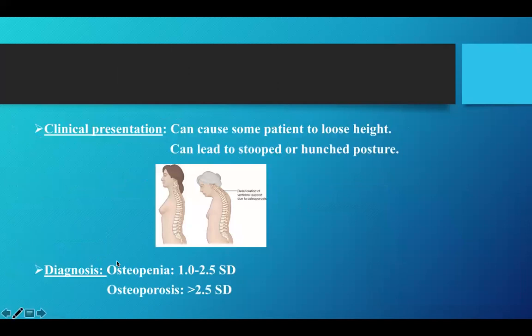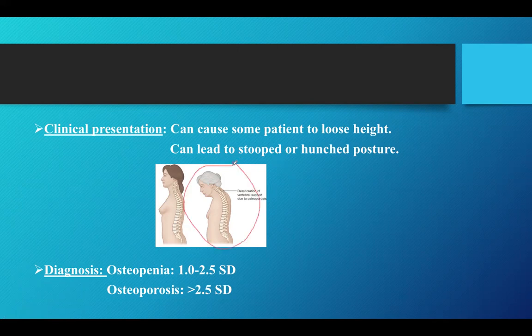Looking at the clinical presentation, osteoporosis can lead to shortening of the bone, which can cause you to lose your height over time. This can also lead to a stooped or hunched posture, as shown in the figure here, which is because of loss of the vertebral body height.